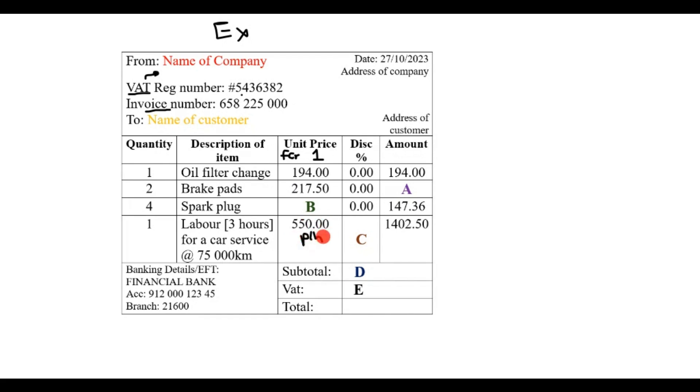Disc percentage - that's actually discount. Sometimes you're lucky and they give you a nice little discount, and they would specify the percentage here. Finally, the amount, also called the total cost, is basically the quantity and the unit price, and then in total what is it going to cost.